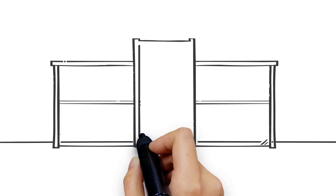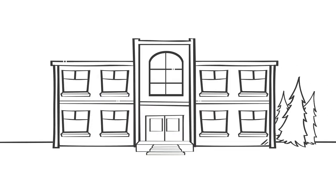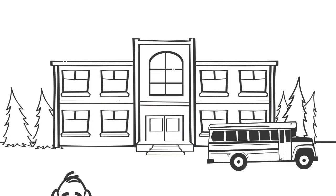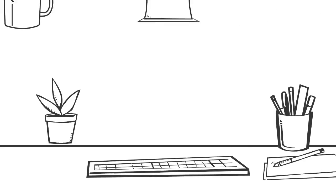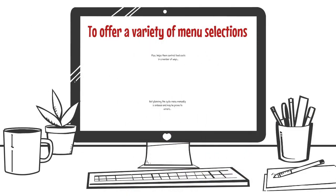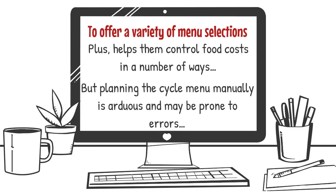Cycle menus used in schools, for example, save time and allow menu planners to offer a variety of menu selections. Plus, they help control food costs in a number of ways.